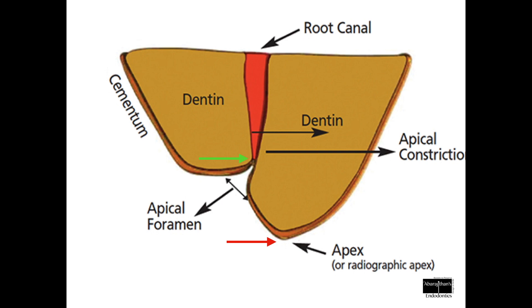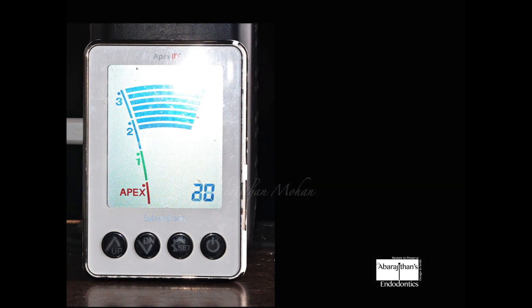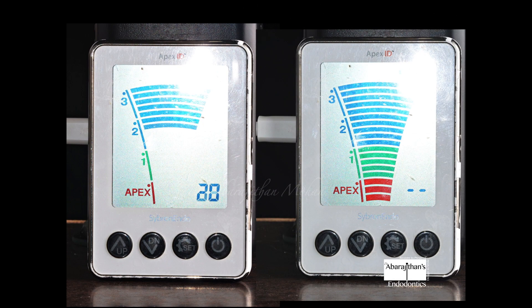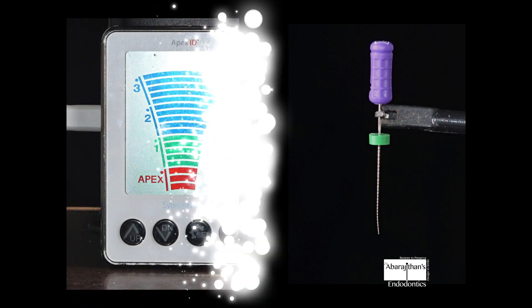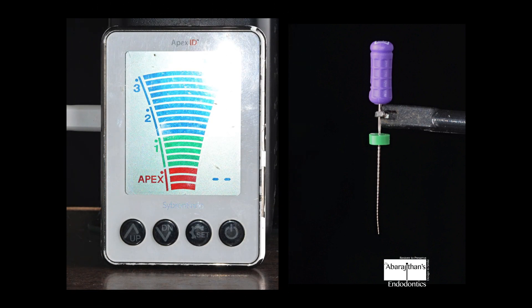The right way of determining where exactly the pulp tissue ends, or where the apical constriction is located, is mainly by the advent of apex locators. Apex locators are simple electronic devices — they have two electrodes. One electrode is the lip clip which is attached to the patient's lip, whereas the other is the file holder, traditionally used with K-files. By slowly moving the K-file inside the root canal, we see the visual display on the apex locator, which is used for determining the working length.